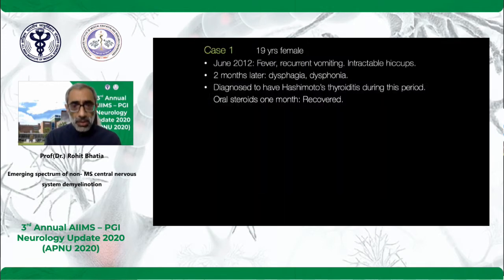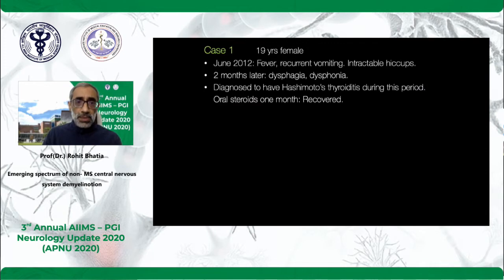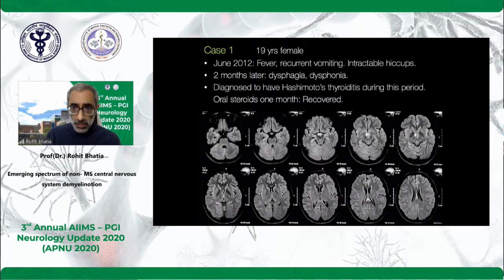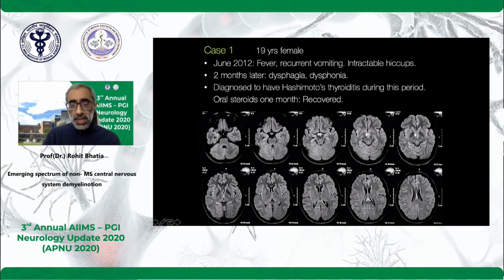Let's go to a case study: a 19-year-old female with recurrent vomiting and hiccups in 2012, later diagnosed with dysphagia and dyspnea. Looking at her images, the brainstem is pretty much not normal — there is hardly much to see, but there is some hyperintensity in the diencephalic region. At that moment she just received some steroids and got better.